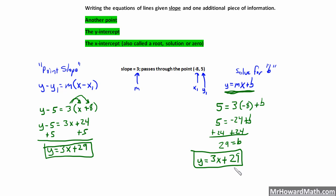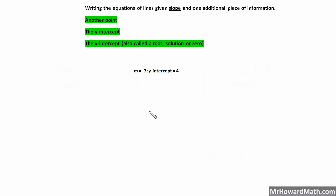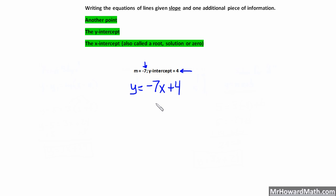Let's look at the next example. We're given m and the y-intercept. This is easy — this is a piece of cake. This is simply y equals negative 7x plus 4. We're given our b value and our m value, so we just plug in m there and b there, and we're done.